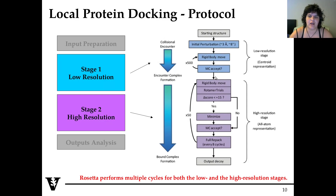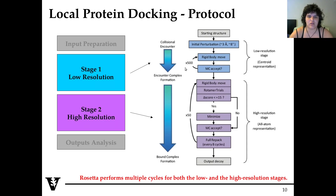For the ones that are accepted at the low resolution stage, we go into the high resolution stage, where we first change centroid to full atom. Then we try rotamers, and if the delta score is lower than 15, we do minimization and Monte Carlo can accept or discard. We will have 50 cycles, and every 8 cycles we will have a full repack. When all this is finished, we will have our single output. This is quite a complicated process and is one of the longest applications in Rosetta — producing one single model will take about 30 minutes.